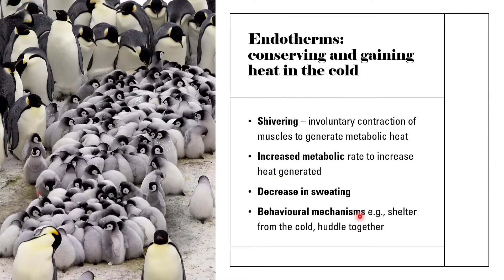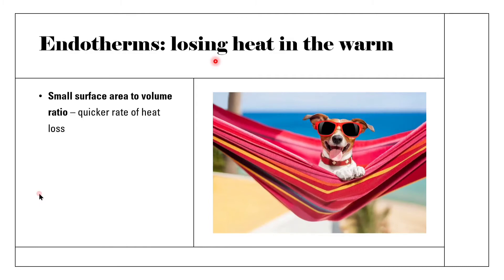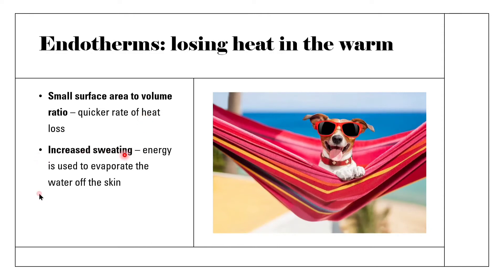Moving on to how endotherms lose heat in the warm — still looking at organisms that generate heat through metabolic or physiological processes, but now how they lose heat when it's warm. Adaptations to a warm environment may include a large surface area to volume ratio, which means a quicker rate of heat loss because there is a larger surface area to lose heat from.